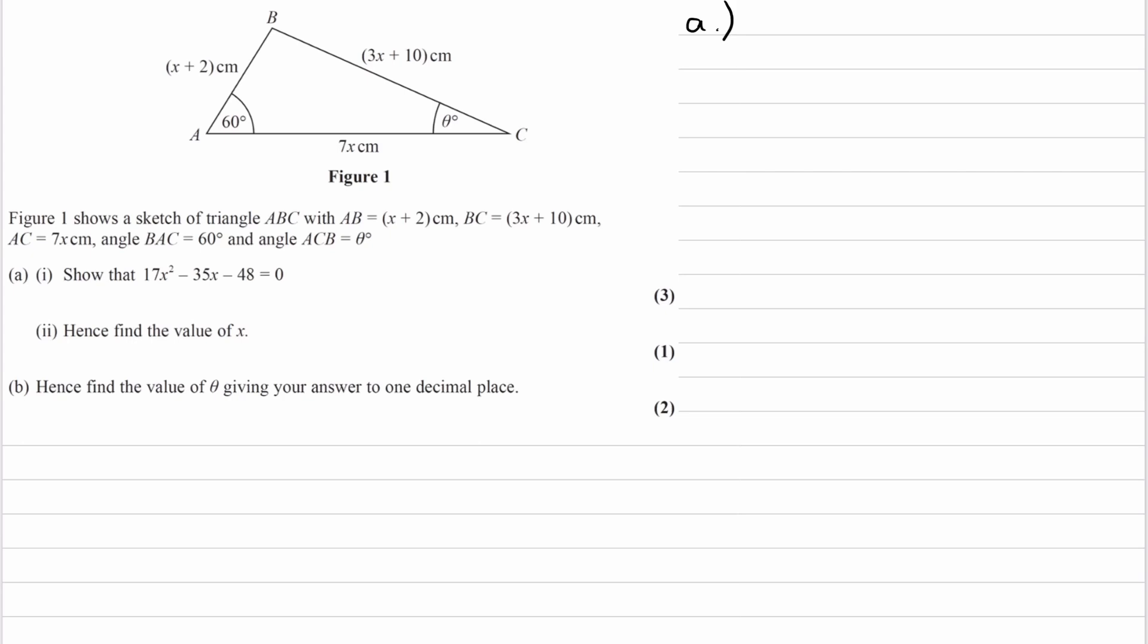So if we're using the cosine rule, well, we have this angle here, 60 degrees. We can say that, well, that is already called angle A actually, so that's convenient.